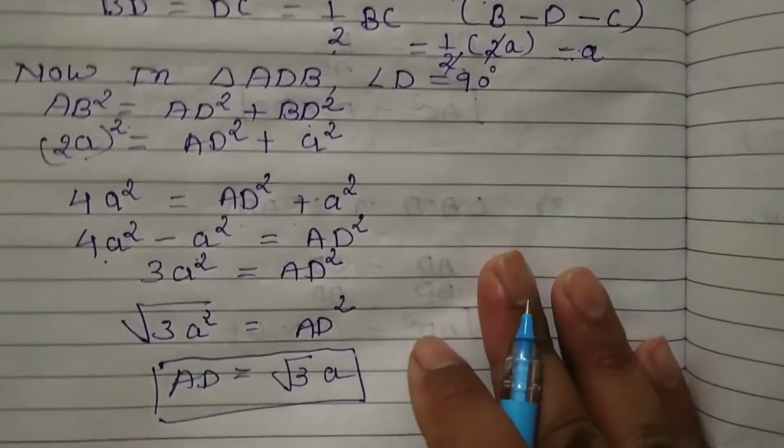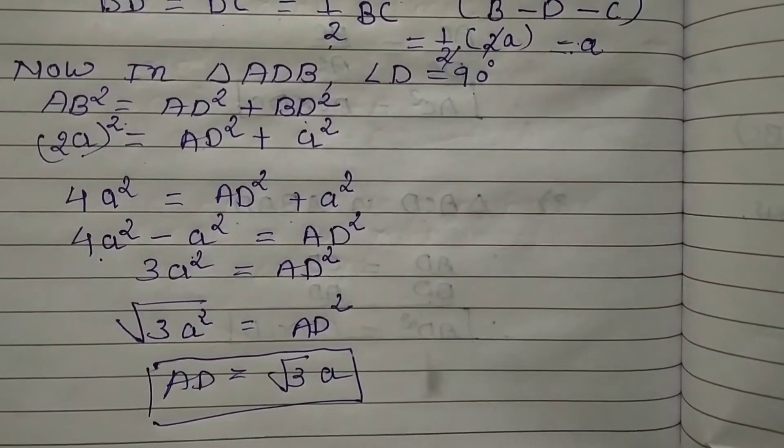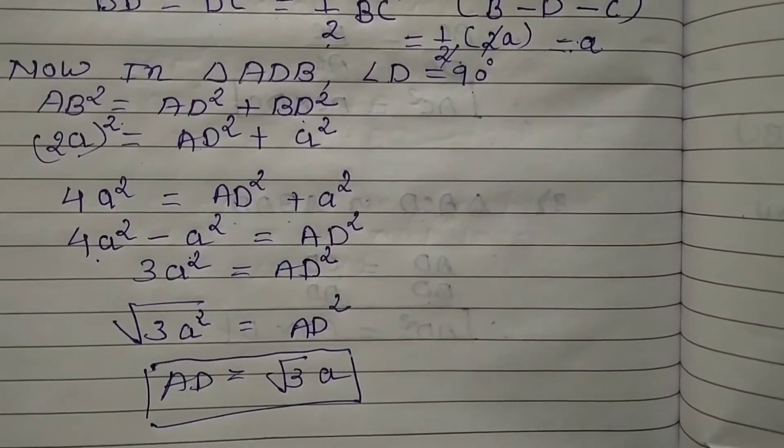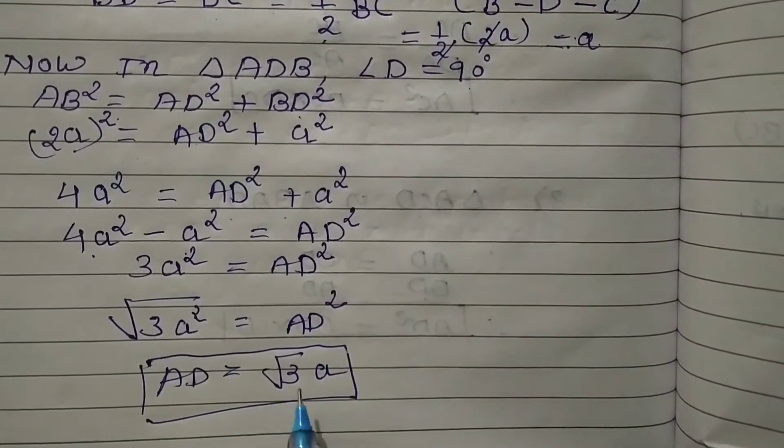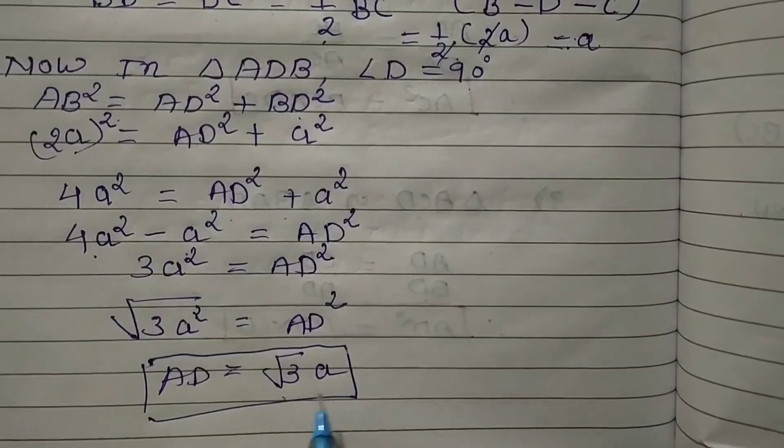This is the final answer. All altitudes of triangle ABC are equal because it is an equilateral triangle. The altitude equals a√3.